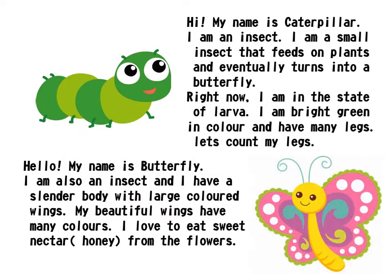Hi, my name is Caterpillar. I'm an insect. I am a small insect that feeds on plants and eventually turns into a butterfly. Right now, I am in the state of larva. I am bright green in color and have many legs. Let's count my legs.